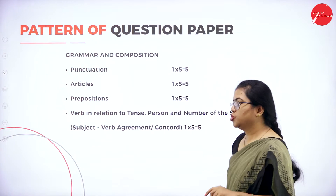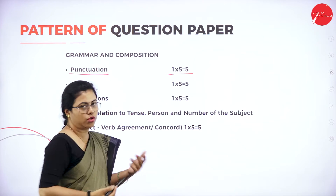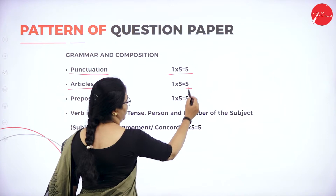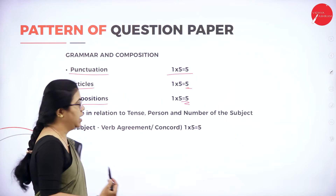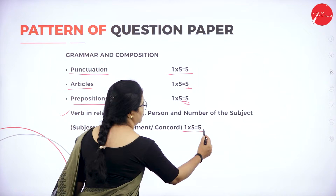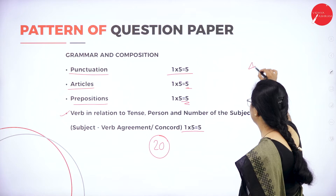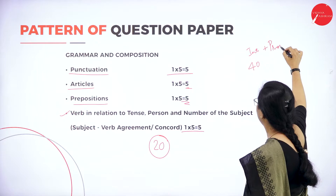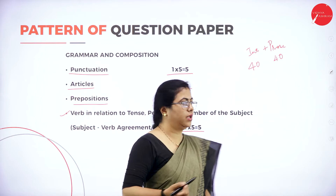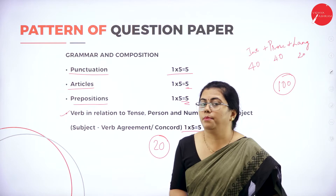In grammar and composition — the language component — you have punctuation questions, all one-mark questions, for 5 marks. Then articles for 5 marks, and prepositions also for 5 marks — all one-mark questions with no choice; you have to answer all 5. Then subject and verb agreement, also for 5 marks. So the language component comes to 20 marks altogether. So: internals 40 marks, prose and poetry 40 marks, and language component 20 marks — altogether 100 marks. This is the pattern of question paper.